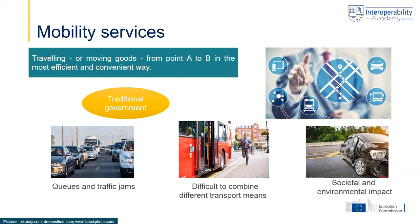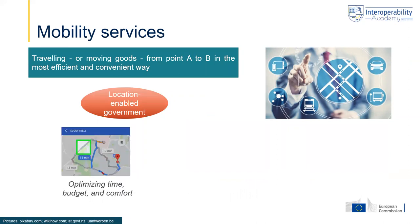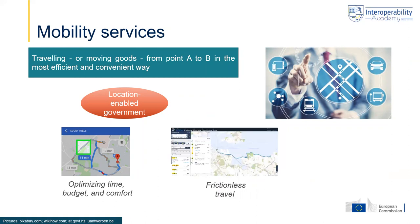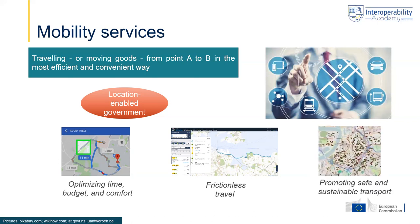Location data and technologies could also be used to support these services. It is about optimizing time, budget, and comfort by providing information to citizens on how they can get from point A to point B in the easiest and cheapest way. Regarding seamless or frictionless travel, location data could show the best way to combine different transport modes and allow citizens to access each of these means efficiently, integrating all services into one platform. Location technologies could also provide information on how to make transport safer and more sustainable.